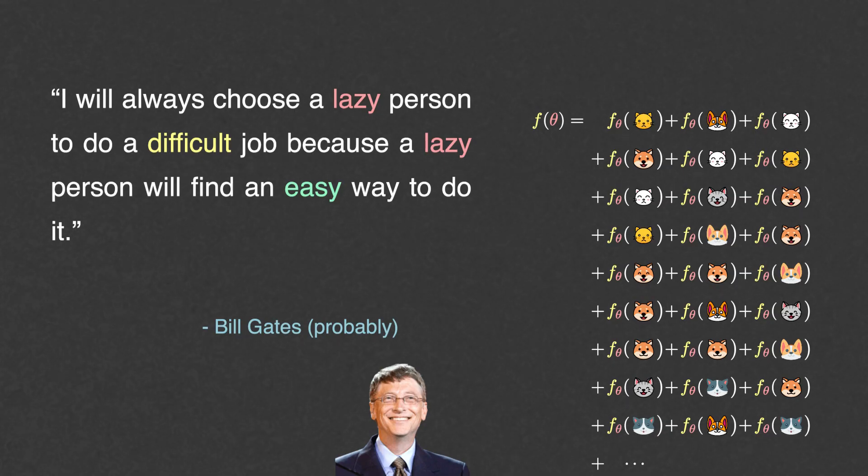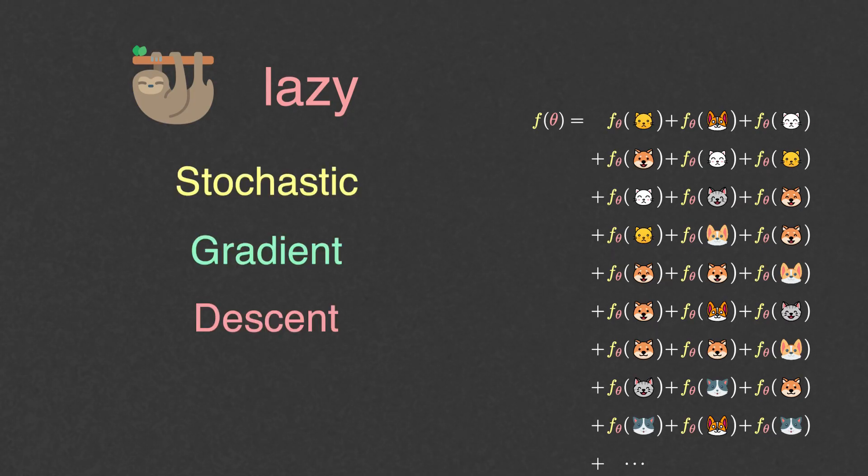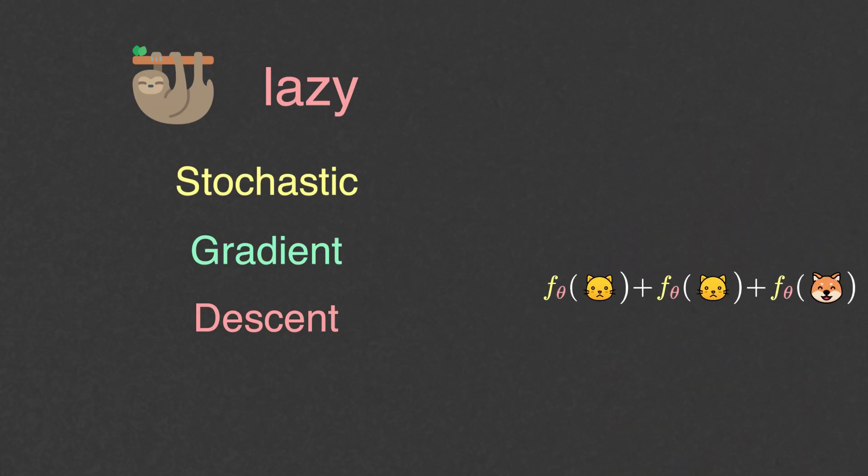Well, Stochastic Gradient Descent is a lazy person approach to address gradient descent's problems. Stochastic Gradient Descent works exactly the same as gradient descent, except that instead of computing the gradient of the whole loss function, you just pick a constant number of terms and take the gradient of that. Stochastic Gradient Descent picks these terms exactly as a lazy person would, in a completely random fashion.